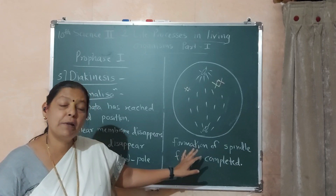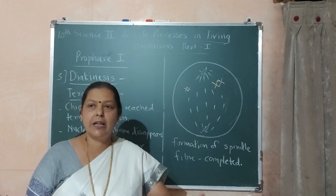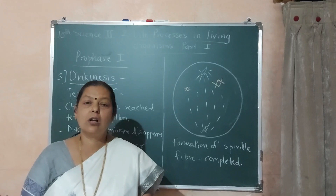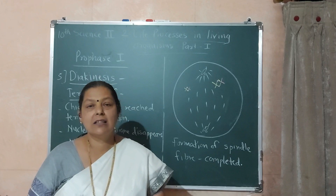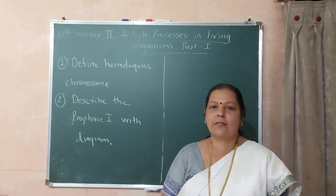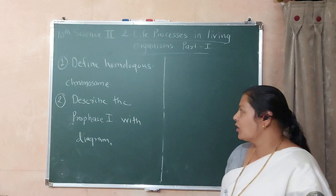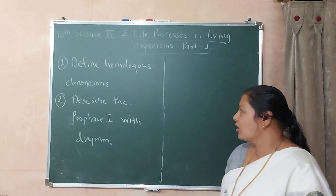This is the completion of prophase 1st. To revise all of these things, I am giving two homework questions: first, define homologous chromosome; and second, describe prophase 1st with a diagram. Please complete this homework. Thank you very much.